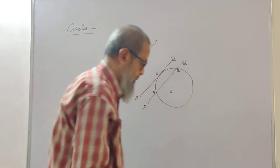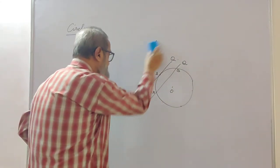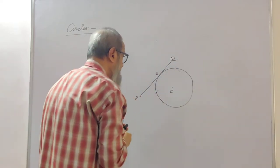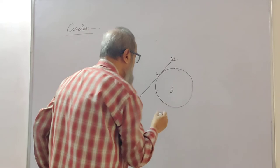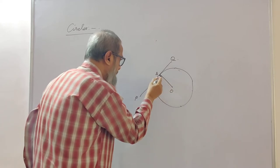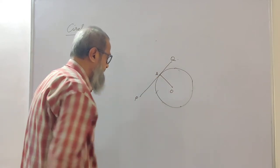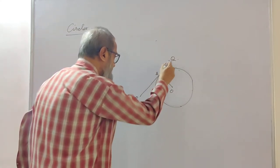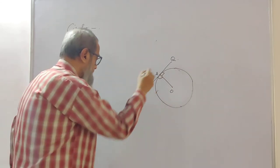Now, if we have a tangent and we join OA — the radius to the point of contact A — the two straight lines OA and PQ are at right angles to each other. This is a right angle, that is, these angles are 90 degrees.